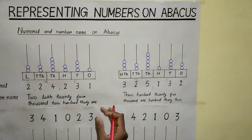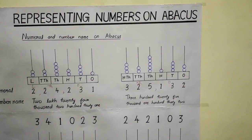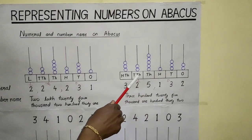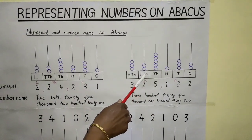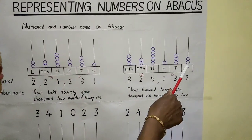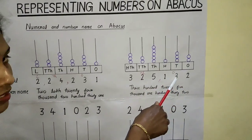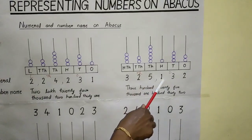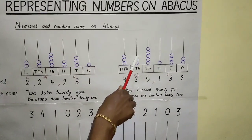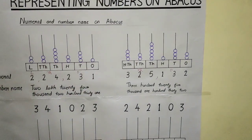Similarly, we can write the numeral and number name to represent this Abacus also. Here the first rod represents the one's place, next is tens, hundreds, thousands, ten thousand, and hundred thousands. Number of beads in one's place is two, three in tens place, one in hundreds place, five in thousands place, two in ten thousands place, and three in hundred thousands place.